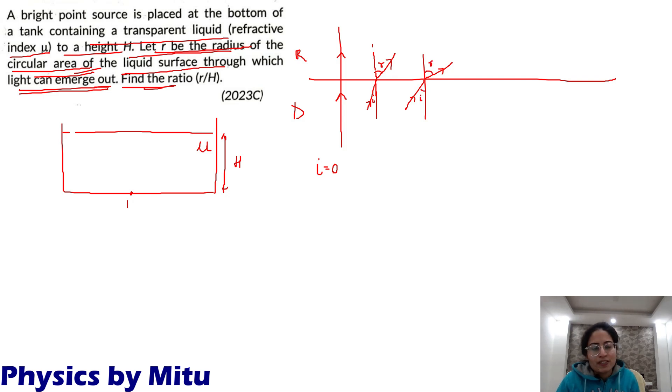At a certain angle of incidence, angle of refraction becomes 90 degrees. The refracted ray grazes along the interface. This angle of incidence is called critical angle. Now if angle of incidence is increased beyond critical angle, the ray of light will reflect back. This is TIR.